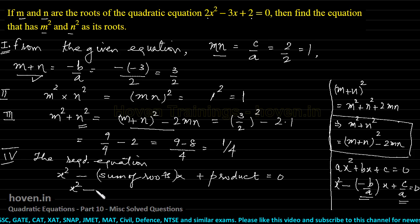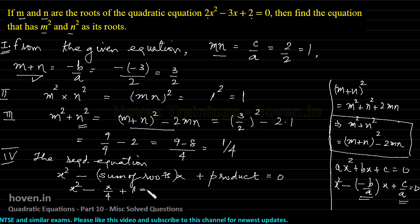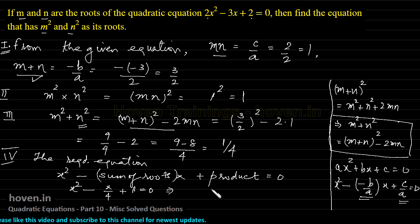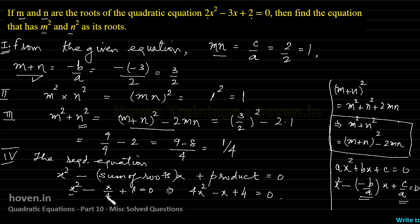The sum of roots is 1/4 and the product is 1, so the equation is x² - (1/4)x + 1 = 0. Multiplying throughout by 4: 4x² - x + 4 = 0. The 4 cancels with 1/4 leaving -x, and 1 becomes 4. This is the required equation.